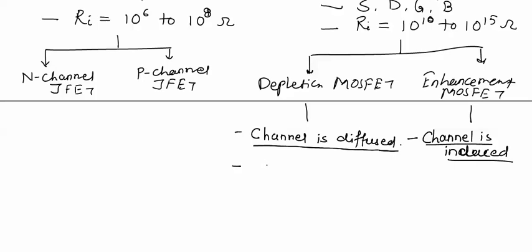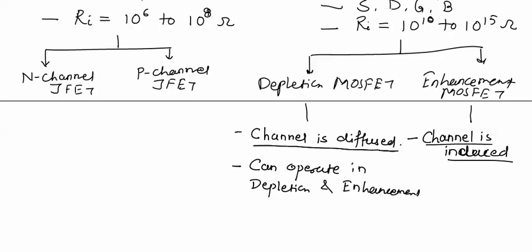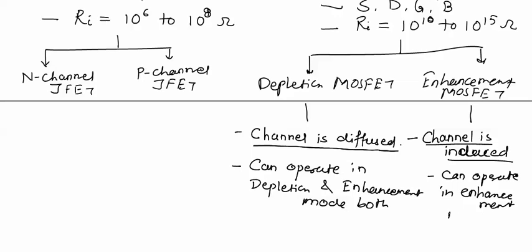One more difference between Depletion MOSFET and Enhancement MOSFET is their operating modes. Depletion type MOSFET can operate in both Depletion mode and Enhancement mode. Enhancement type MOSFET can operate in Enhancement mode only. The Depletion MOSFET is further divided into N-channel and P-channel.